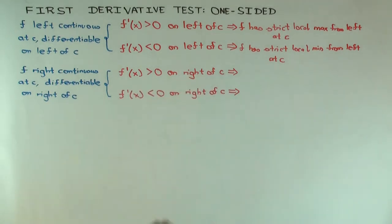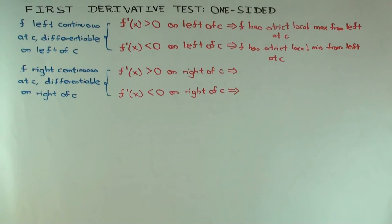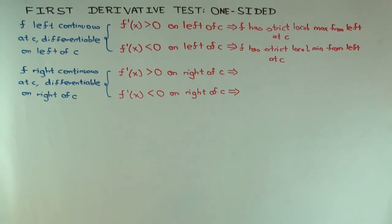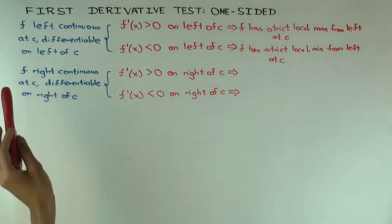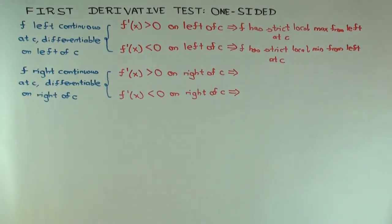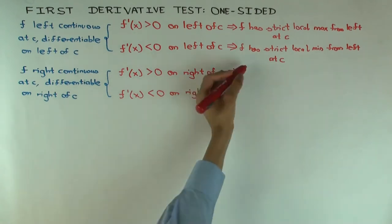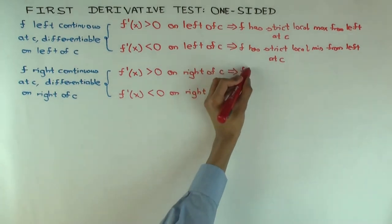If f prime of x is positive on the right, the function is increasing on the immediate right of c. And since it's right continuous at the point, you can extend that increasing behavior to the point itself. So what you get is a strict local minimum from the right, because the function values are slightly bigger on the immediate right.